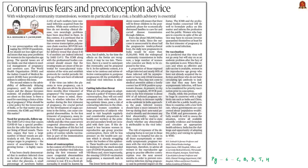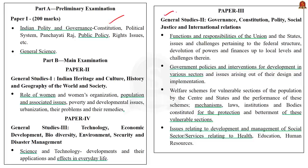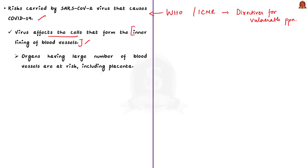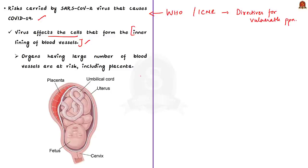This editorial talks about an important fear among women during the pandemic: pregnancy. The editorial is authored by experts who try to answer objectively whether pregnancy is safe in this pandemic. When the pandemic hit, the WHO and ICMR issued directives and guidelines for vulnerable people such as pregnant women and newborn babies. This is important because SARS-CoV-2 affects the cells that form the inner lining of blood vessels, meaning organs with large numbers of blood vessels are at risk — and this includes the placenta, which supplies food and oxygen to the baby during pregnancy.